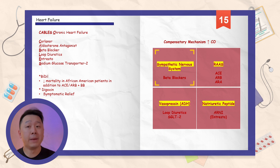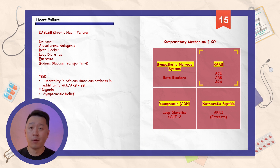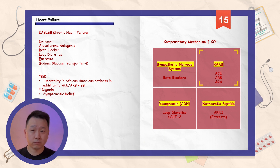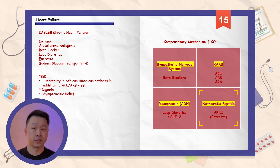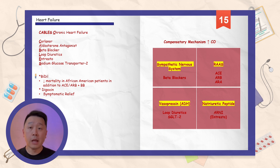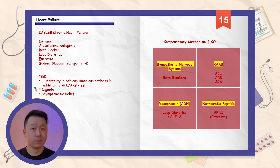Beta blockers can be used to counter sympathetic nervous system activation. ACE inhibitors, ARBs, and aldosterone receptor antagonists inactivate the RAS system. Loop diuretics and SGLT2 inhibitors help decrease fluid overload. ARNI inhibits the breakdown of natriuretic peptide, further achieving vasodilation and natriuresis, ultimately decreasing vascular resistance. Additionally, hydralazine/nitrates are used as a secondary treatment in African-American patients, and digoxin is used only for symptomatic relief in heart failure.